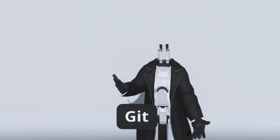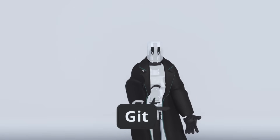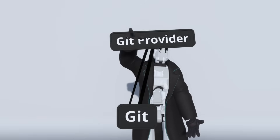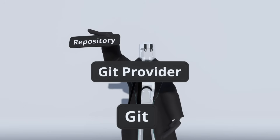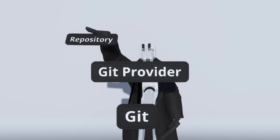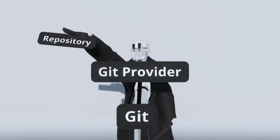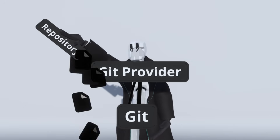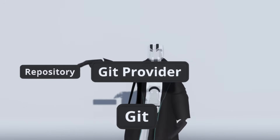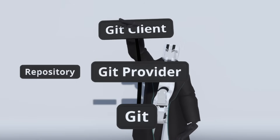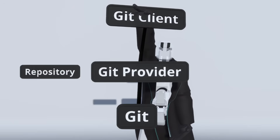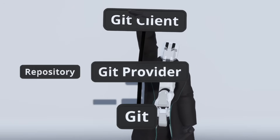To describe it in terms of cloud storage providers like Dropbox or Google Drive: we have a Git provider, which is the equivalent of a cloud storage provider, and hosts your server. It also holds your repositories, which are just like folders in your cloud storage and are containers for some files. And then you have Git clients, which are applications interacting with your server — like the Dropbox or Google Drive app on your phone.